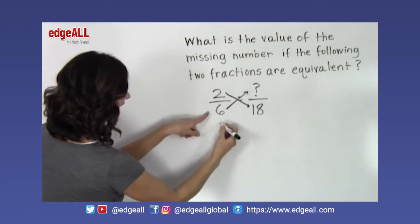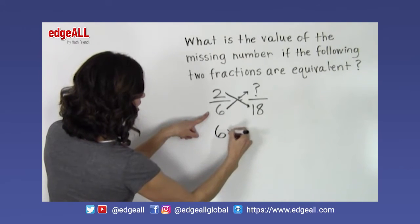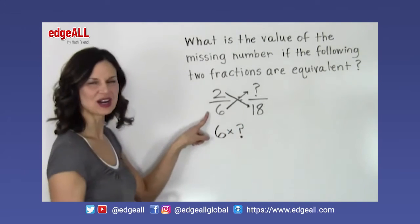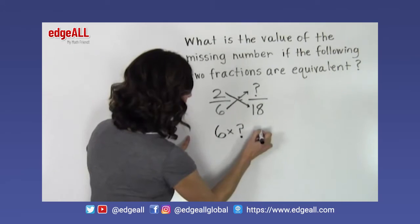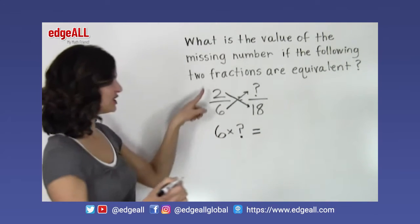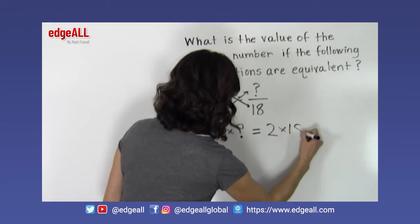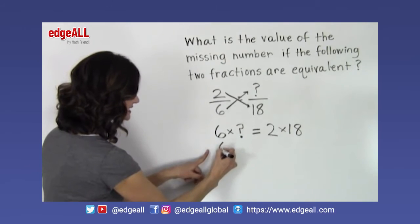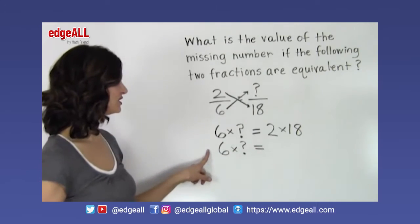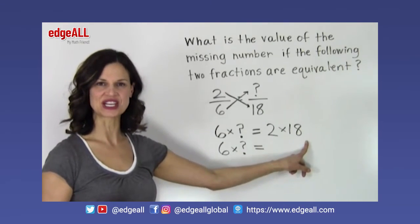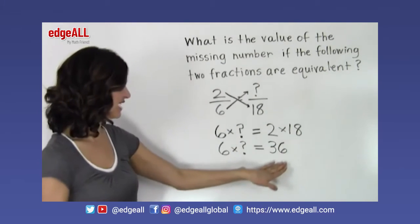So we can say that 6 times this unknown number, we'll leave it as a question mark, we know that 6 times this unknown number has to be equal to 2 times 18. So 6 times some unknown number is going to be equal to 2 times 18 which is 36. So I can make a 36 over here on this side.